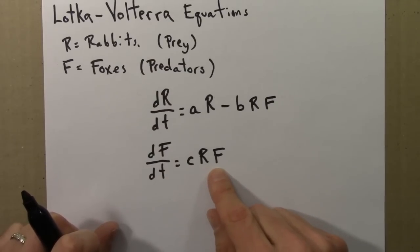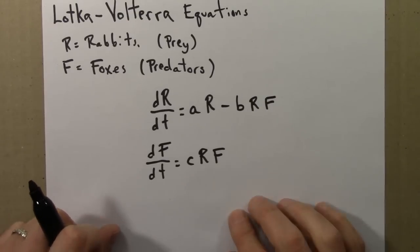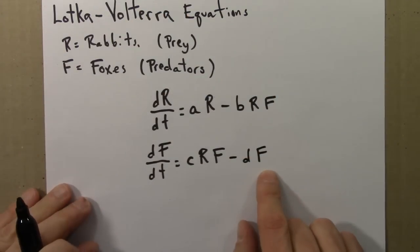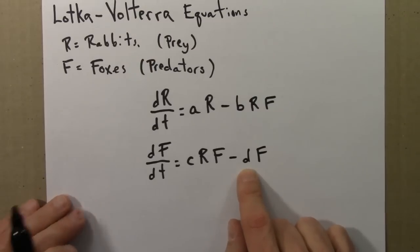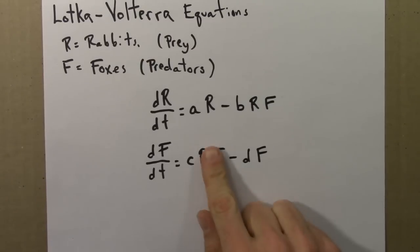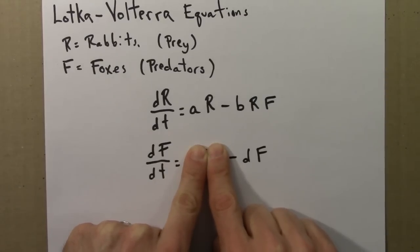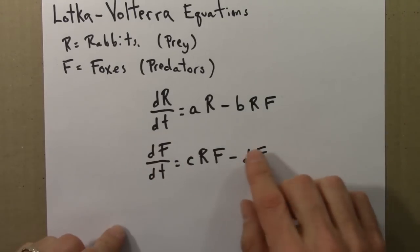So RF is an interaction term. It's large when both R and F are large. If this was the end of this equation, the foxes would take over the universe. They would keep growing and growing and growing. We know that foxes don't take over the universe, so we add one more term, -DF. And D here is a parameter, so this isn't a differential. D is another constant that represents the death rate of the foxes. If there were no rabbits, so we get rid of the interaction term between foxes and rabbits, then this just says that the foxes die at a rate D. This says that the fox population, sadly, would exponentially decay down to zero because they have nothing to eat.